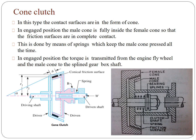What is a cone clutch? A cone clutch is in the form of a cone. You have a driver — called the female — and a driven — called the male. The male cone is fitted inside the female cone with the help of springs. When it is in complete contact with the female cone, the frictional surface is engaged, and the clutch is engaged. The cone angle should be smaller than 20 degrees.